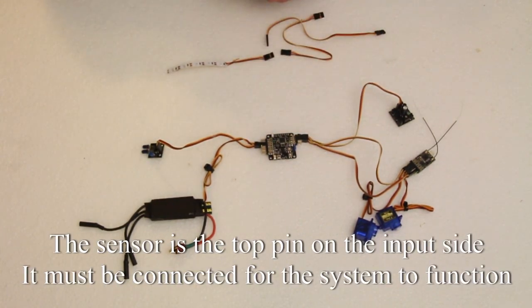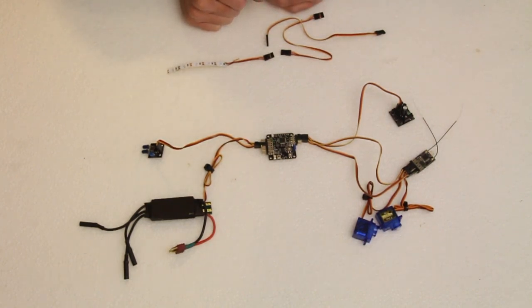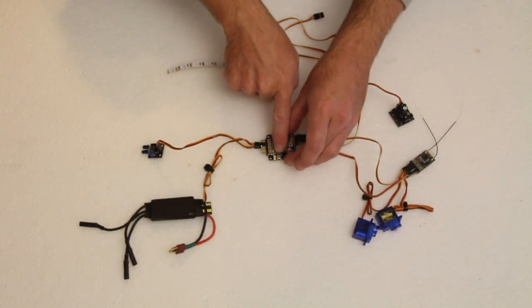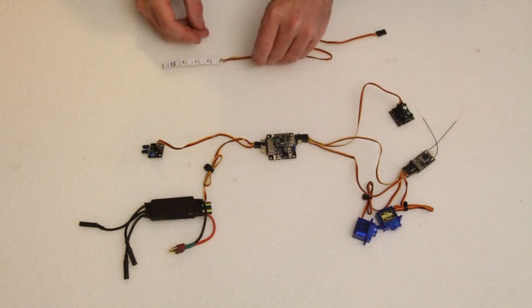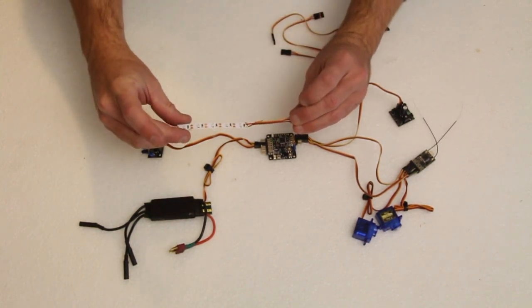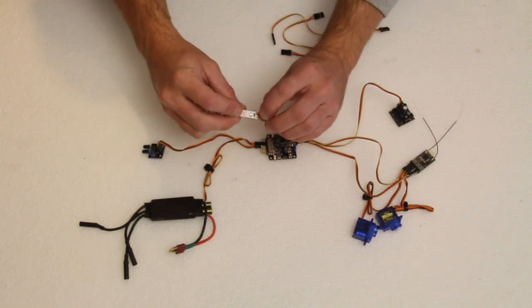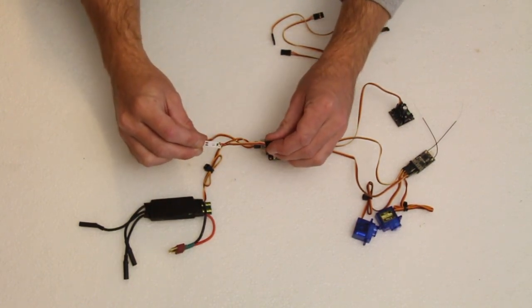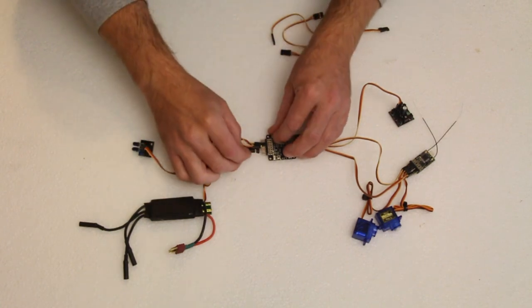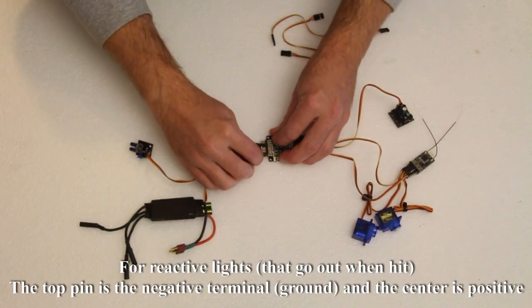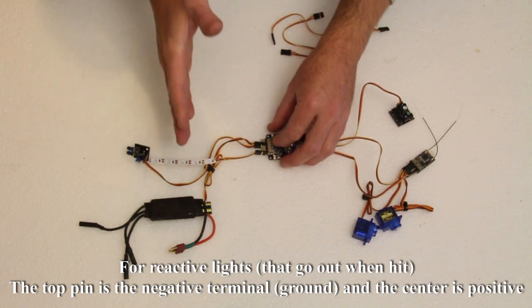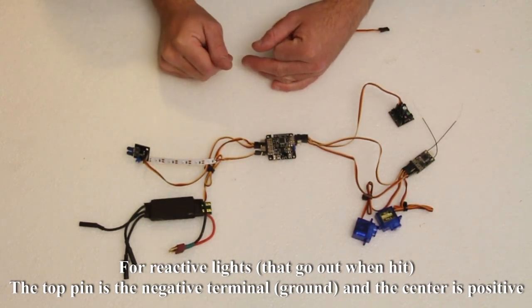However, there are a lot more features to this that you can hook up. The simplest feature is over here that says LED. LED is basically a hit indicator and these are simple 5 volt LEDs. You can see I have the positive and the negative hooked up of just a basic servo lead and I can just plug that in here to either of those two ports. They can take up to 6 LEDs per side.